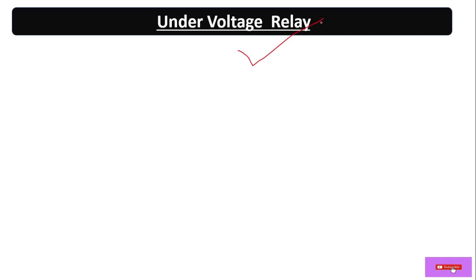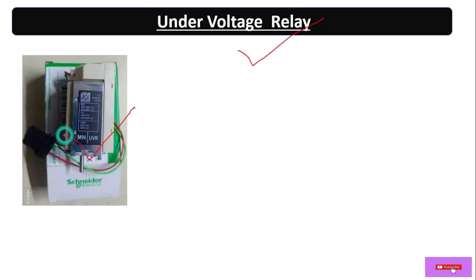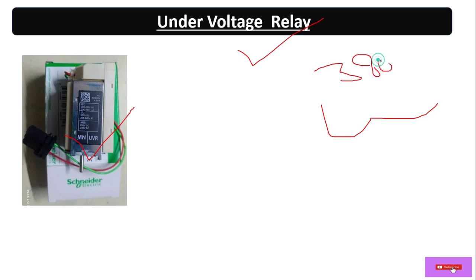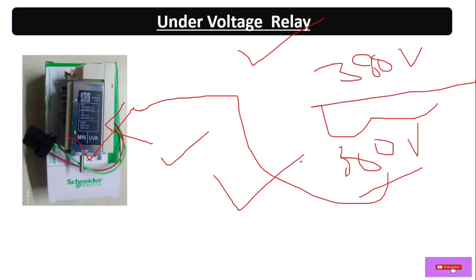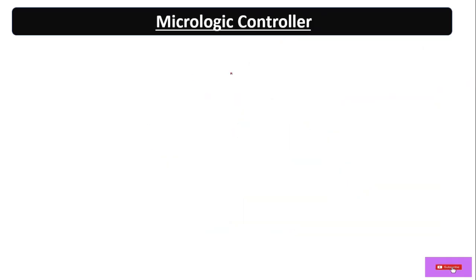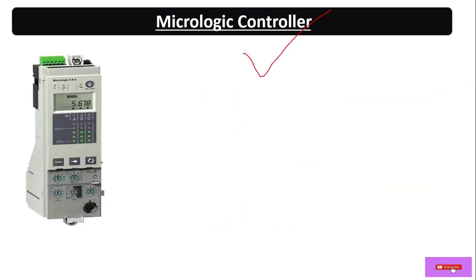The undervoltage relay protects from undervoltage. Suppose we have set it to 380 volts — if the voltage goes below that, say 360 volts, under that condition this relay will activate and it will trip the circuit.